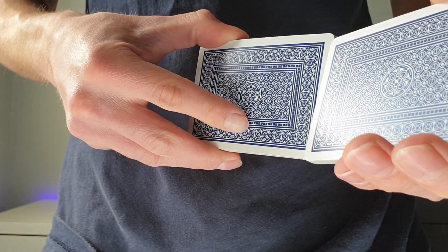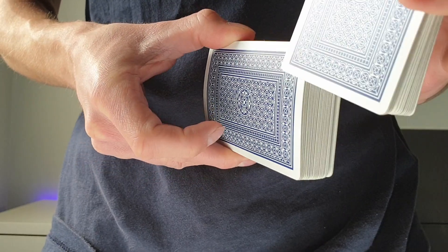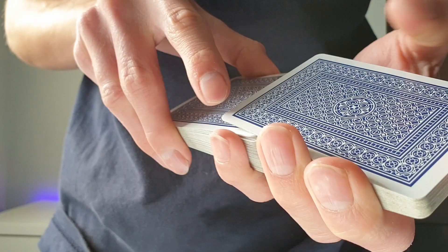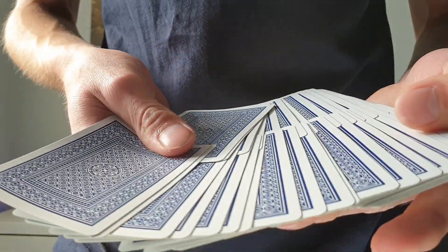I changed the position of the camera so you can hopefully see this better. So after you've weaved it in, you'll see this from your angle. You'll know if you've done it right because when you spread, the cards should be interweaved.